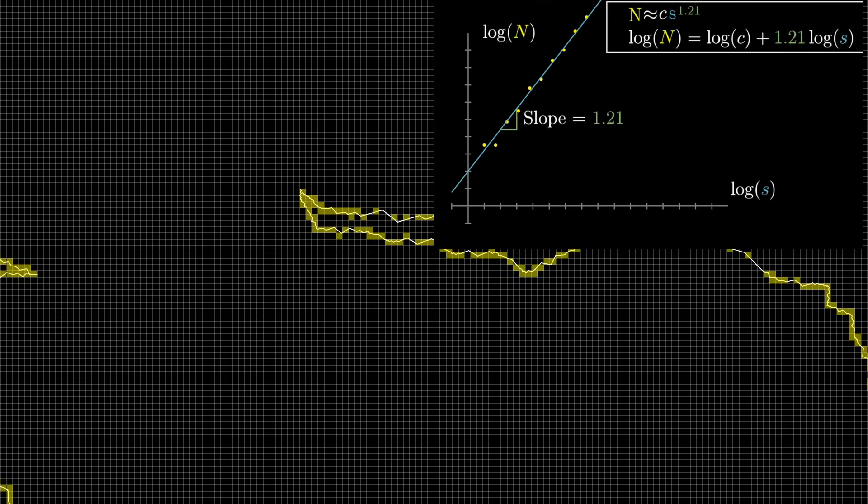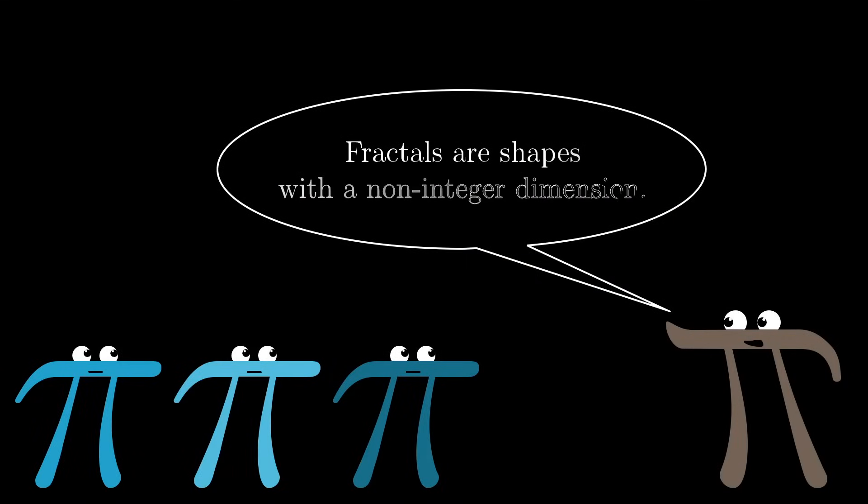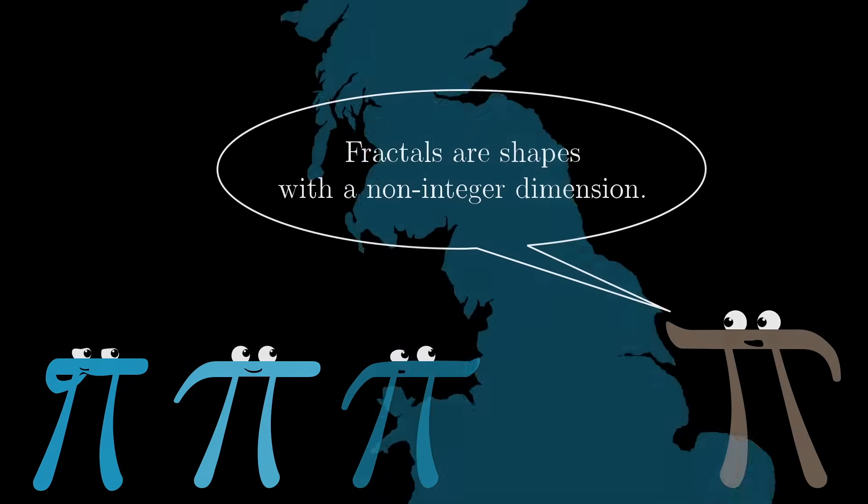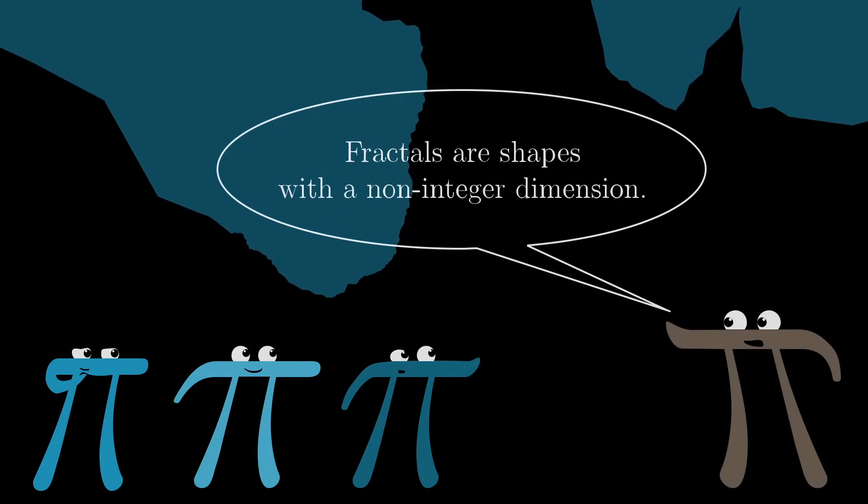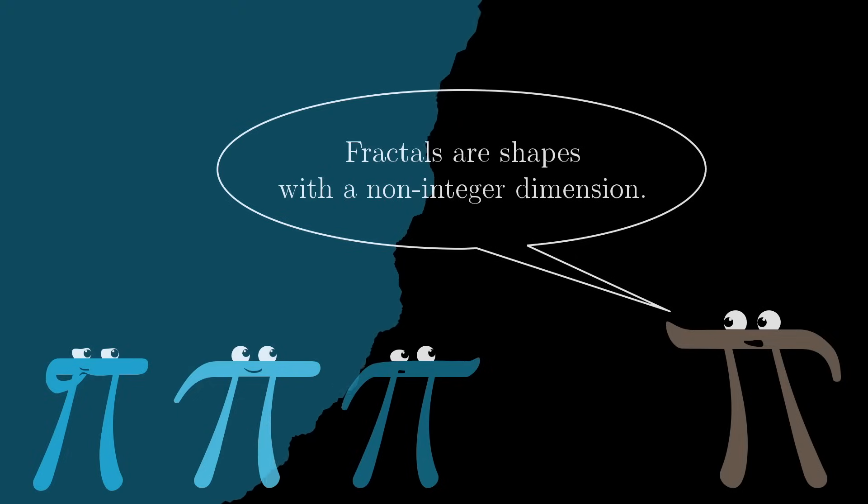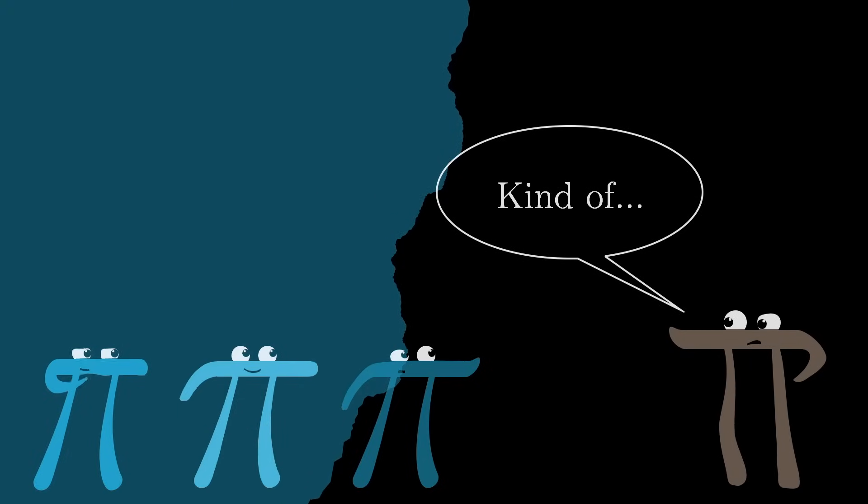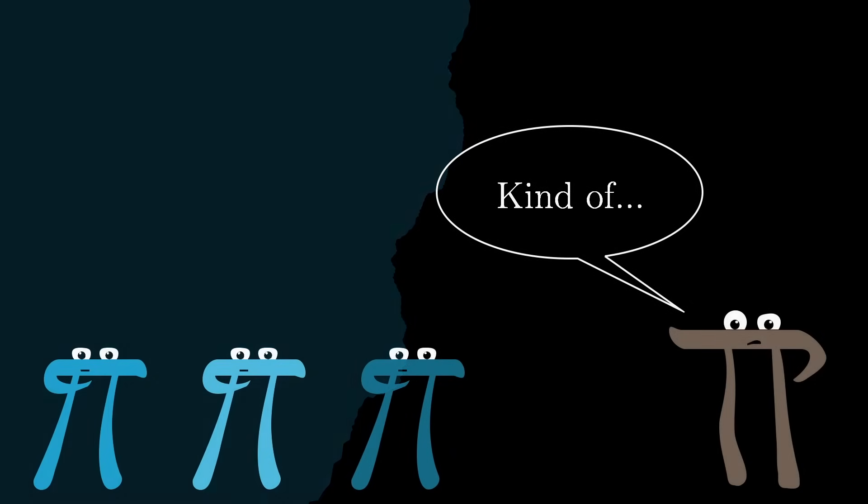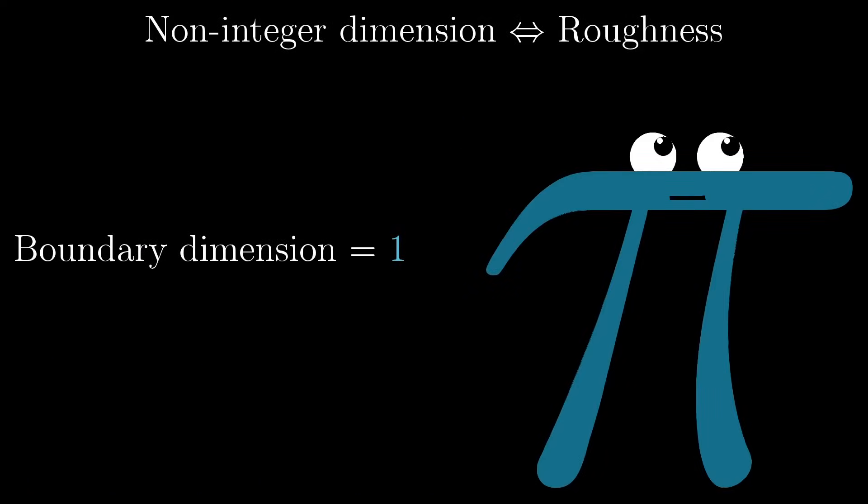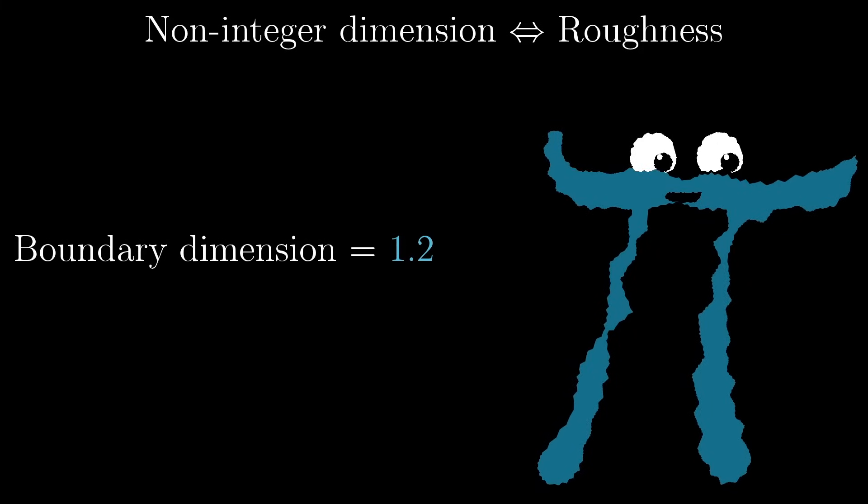And once you're comfortable thinking about dimension like this, you, my friend, have become ready to hear the definition of a fractal. Essentially, fractals are shapes whose dimension is not an integer, but instead some fractional amount. What's cool about that is that it's a quantitative way to say that there are shapes that are rough and that they stay rough even as you zoom in. Technically, there's a slightly more accurate definition, and I've included it in the video description, but this idea here of a non-integer dimension almost entirely captures the idea of roughness that we're going for.